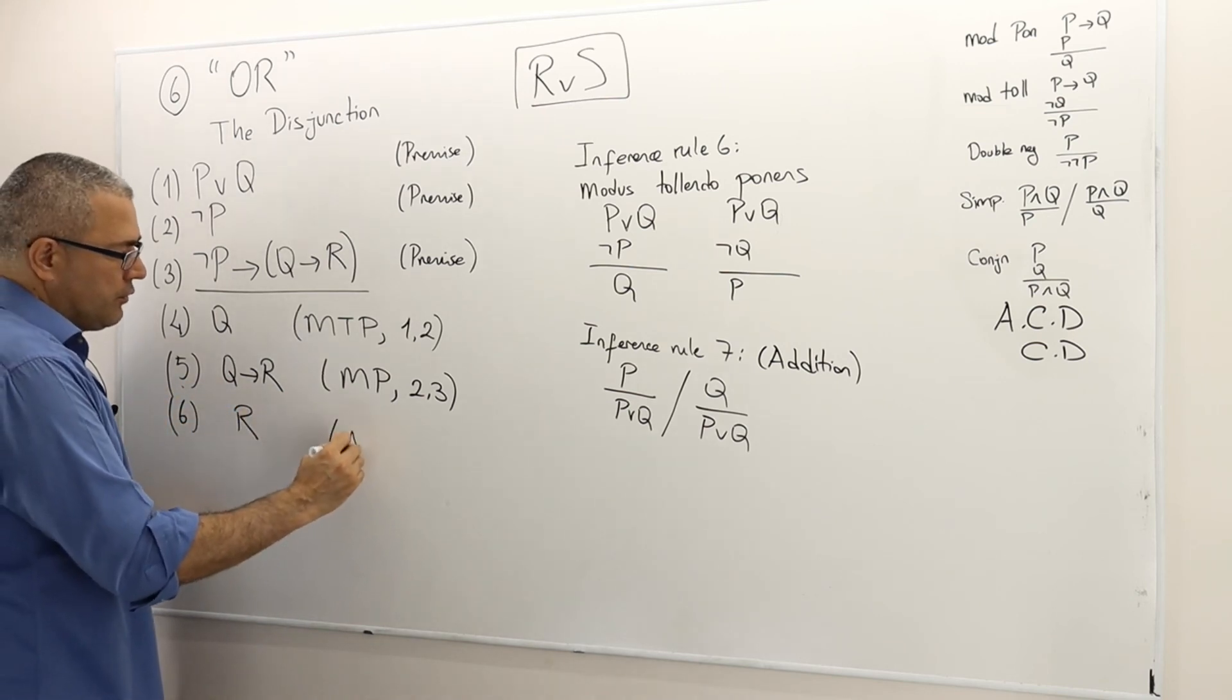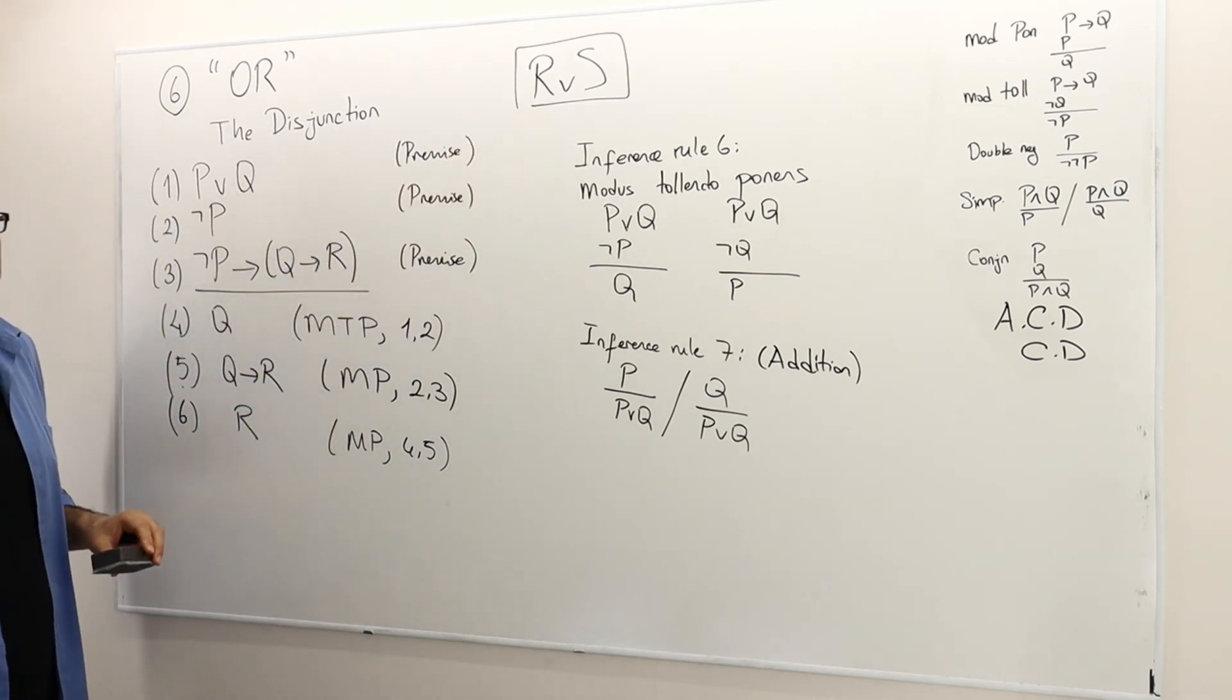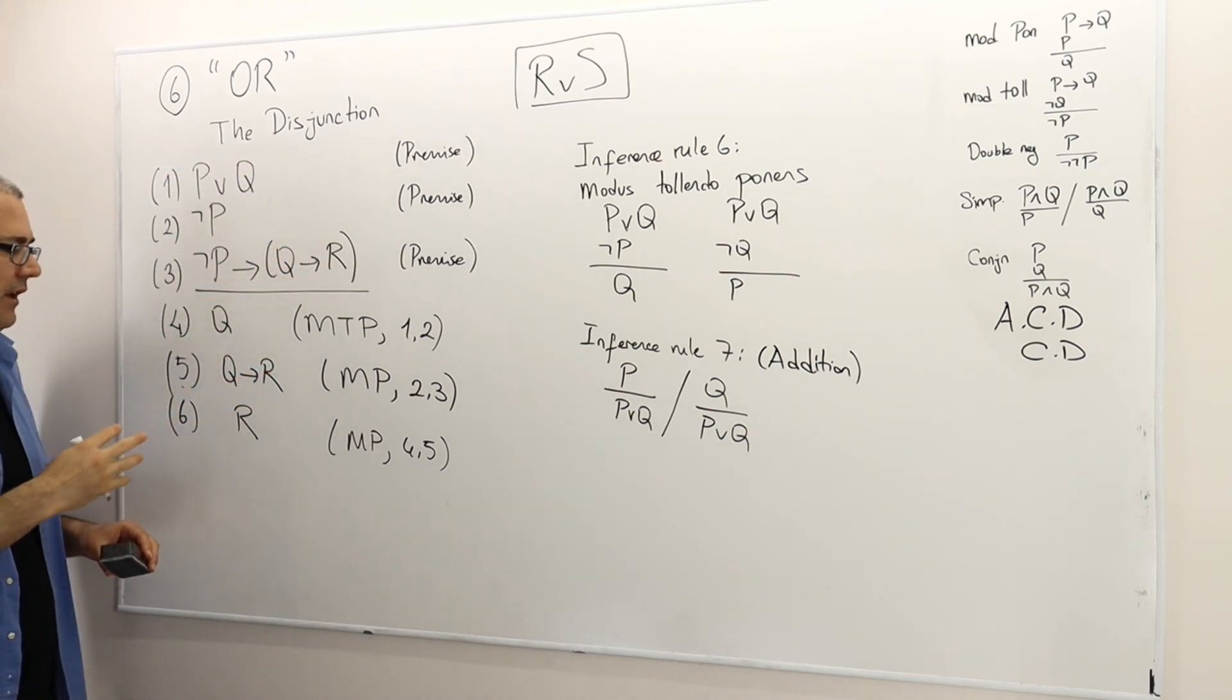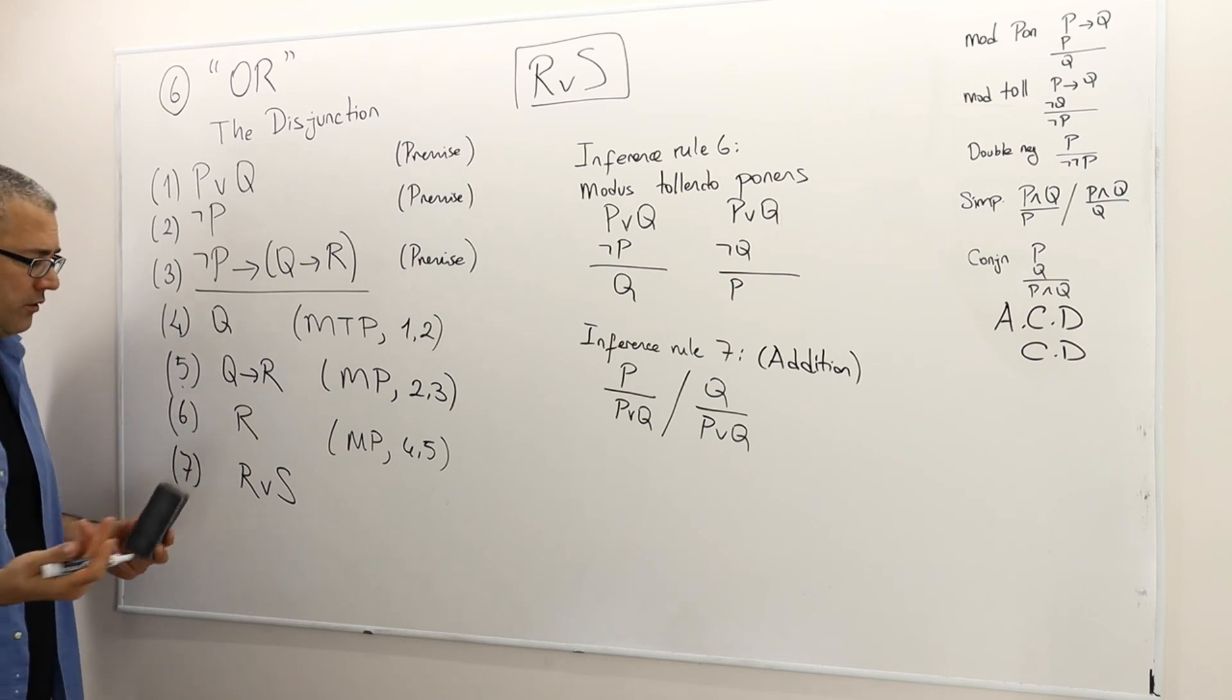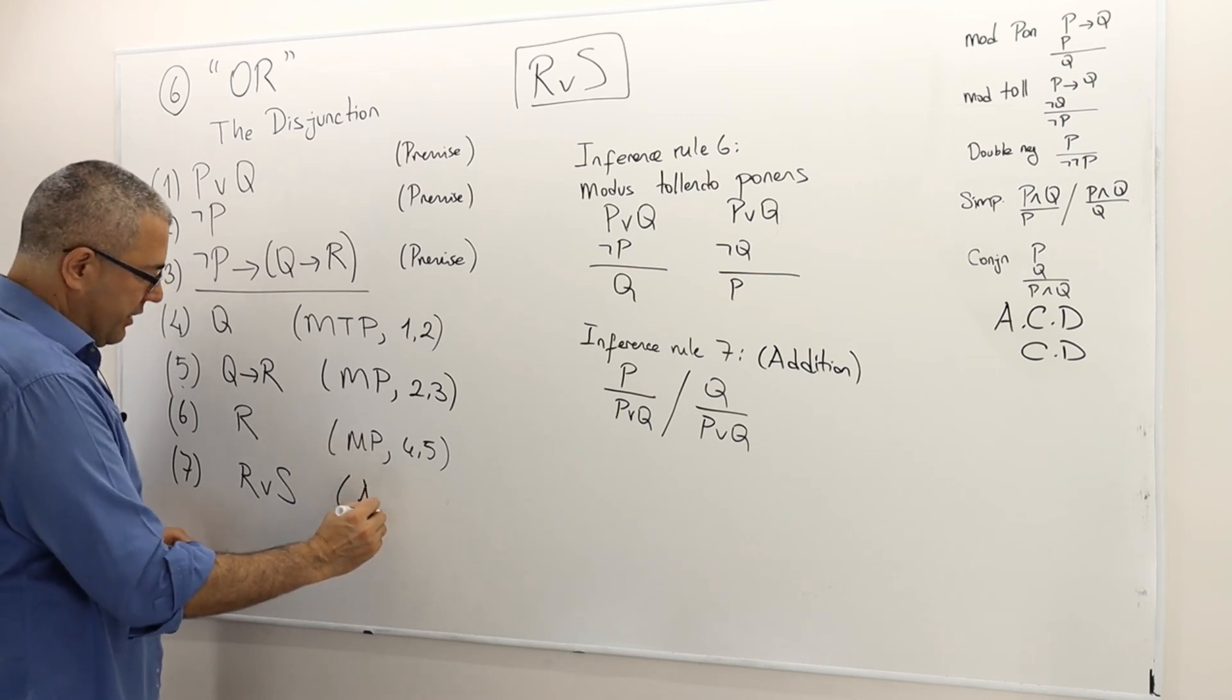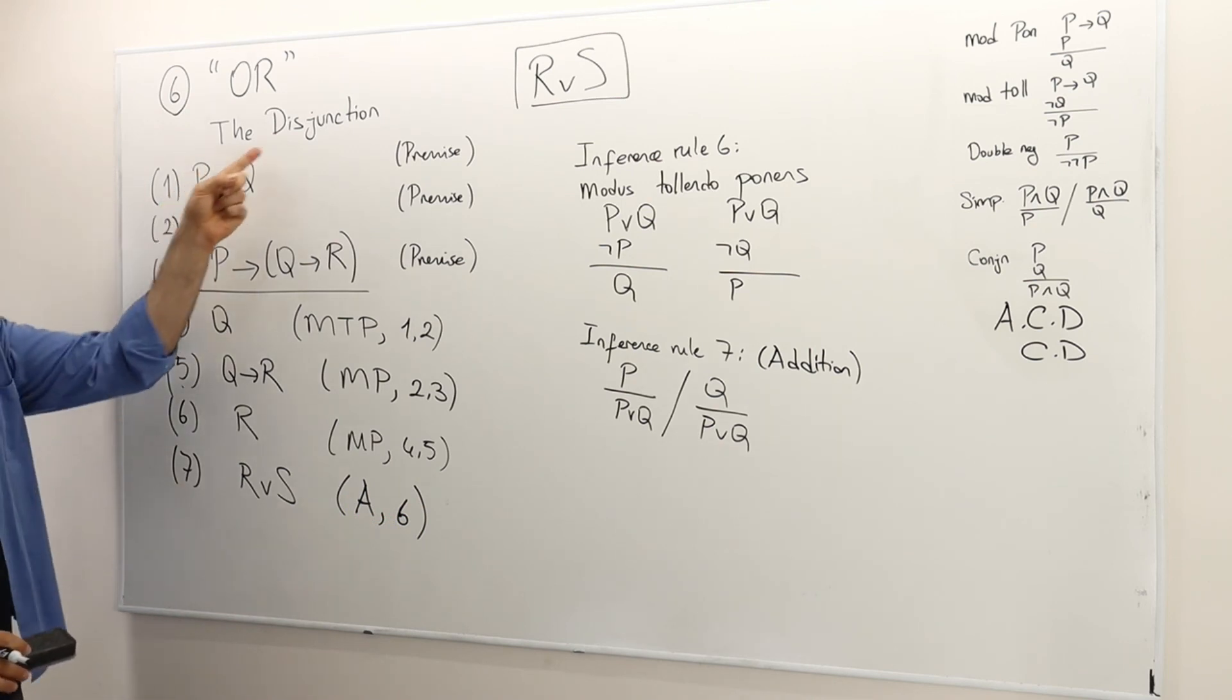So I am done because remember I was aiming to get R or S, either one of them. There's no S by the way here, so therefore I will never get S in any of those lines. So I got R, so that means in line seven I just add a statement S—whether it's true or false doesn't matter—but R or S is going to be true. This is just addition of line six. So this is how we prove an argument using a disjunction.